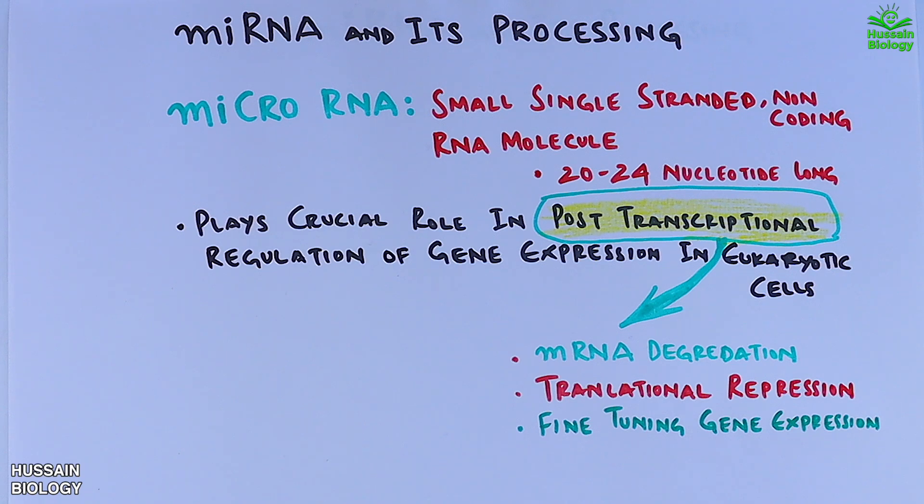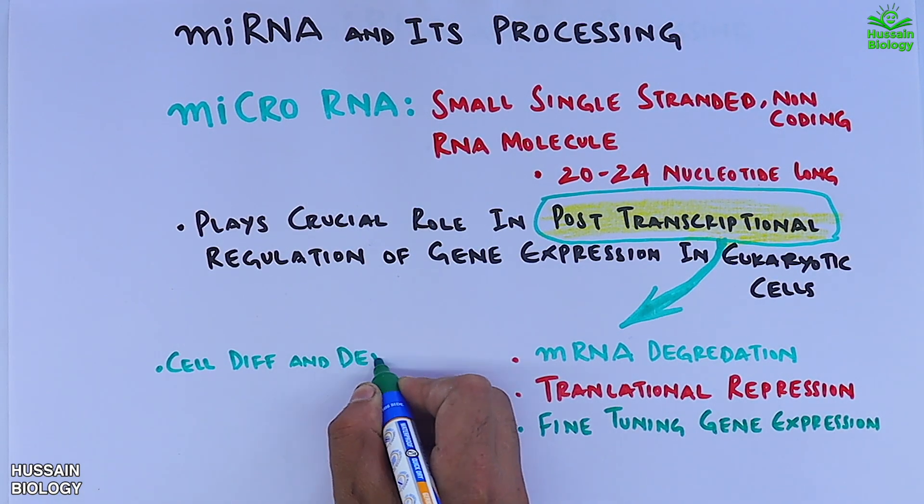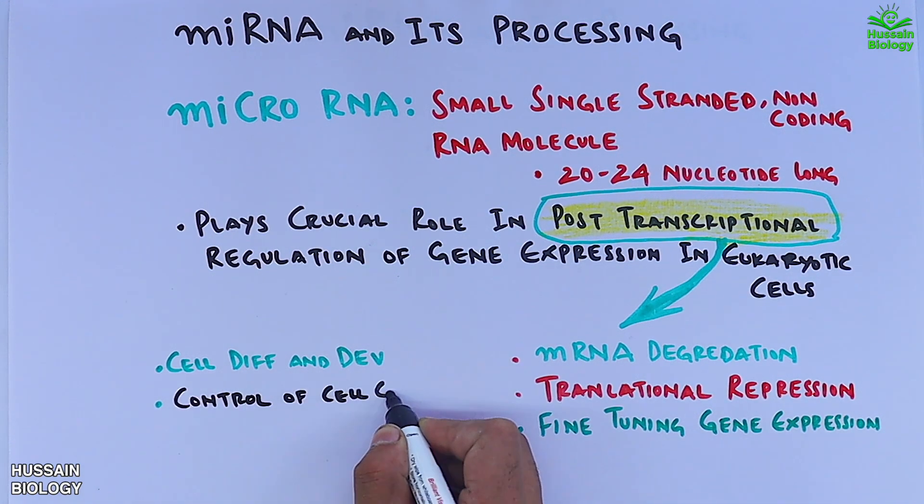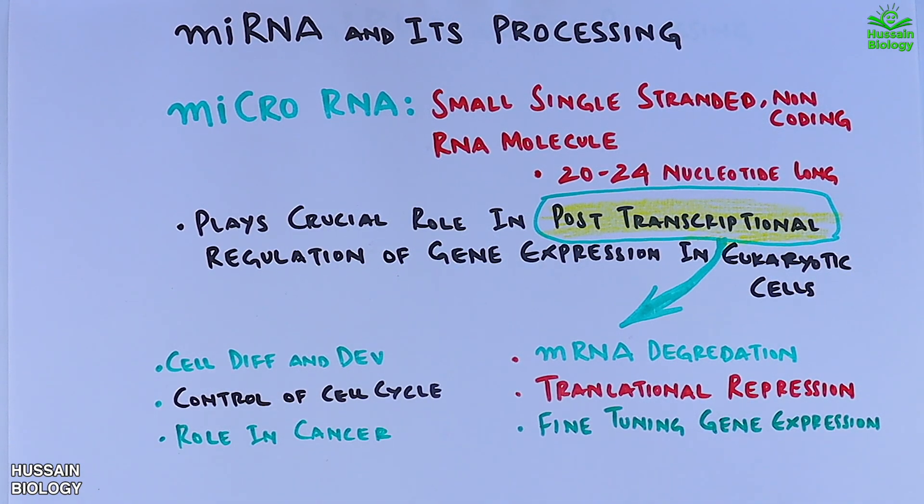Now let's list the biological processes in which miRNAs are involved. These molecules are involved in cell differentiation and development, control of the cell cycle, role in cancer, and immune system modulation.